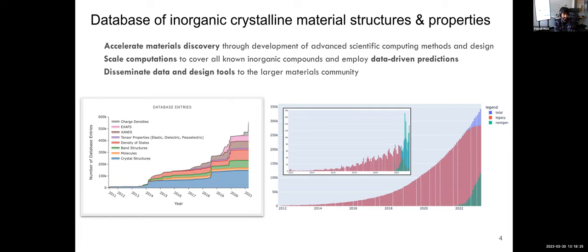Looking at the total user count since inception: the red line is our legacy website running until early/mid 2022, and then we switched to the new website, which has since taken over as legacy ebbed out. Overall growth is still exponential — we're adding about 10,000 users per month and are about to hit 350,000 users.